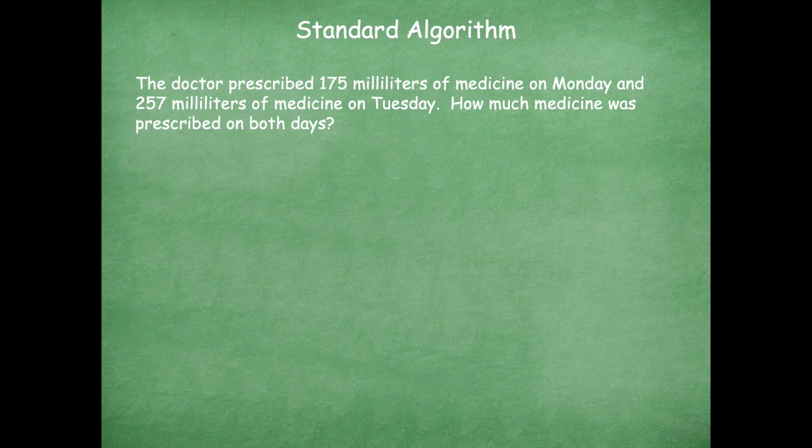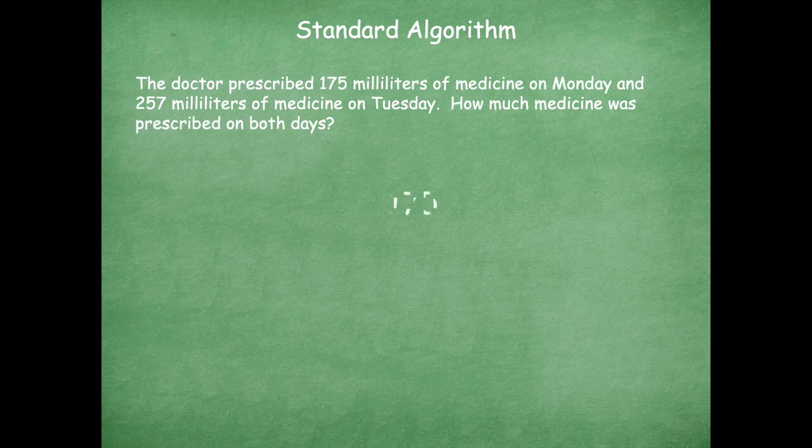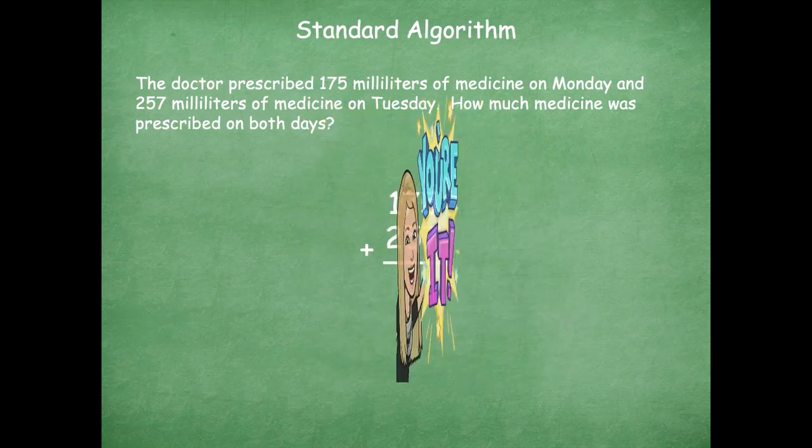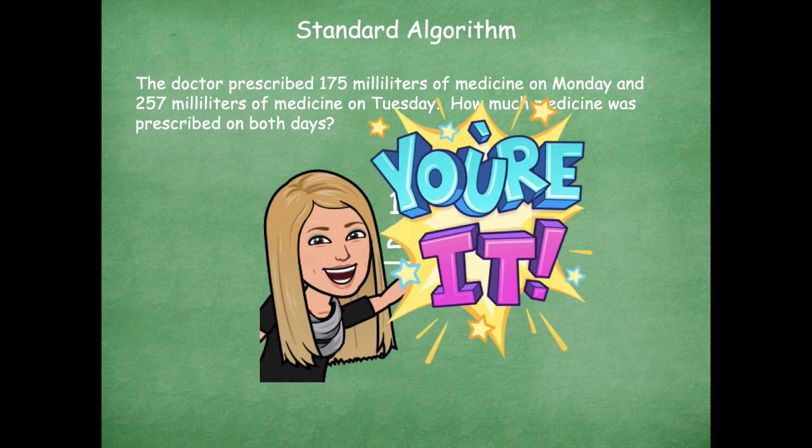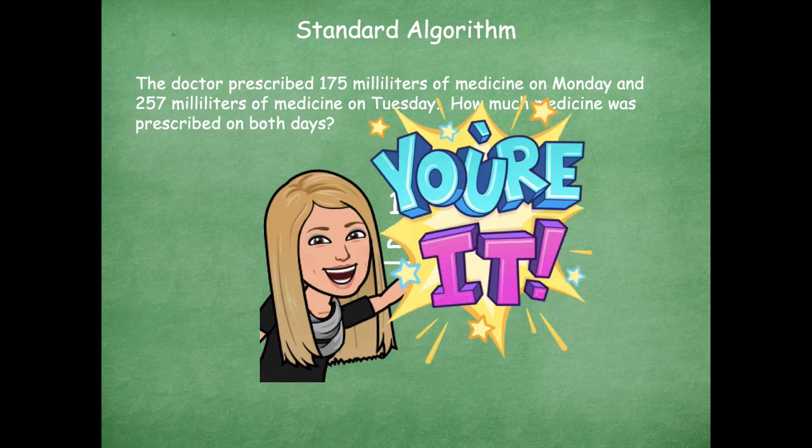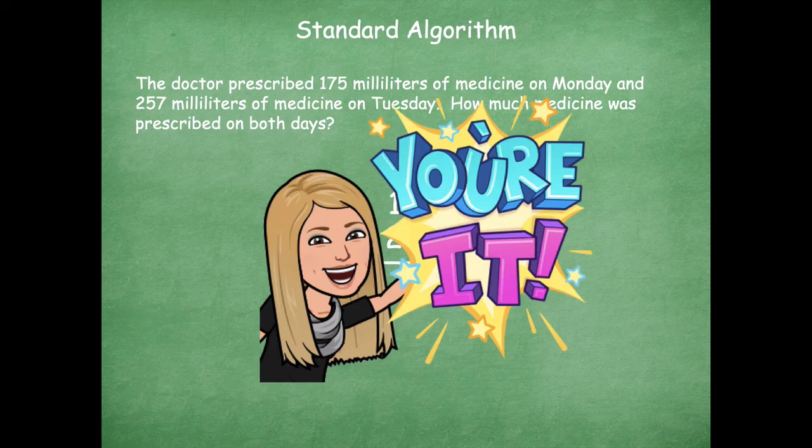So when they're talking about Monday and Tuesday and they want to know something about both days, I'm going to add those together. So I'm going to add 175 plus 257. You guys are it again in this one. I love it. You guys are just rock stars working so hard. So go ahead and pause the video and solve 175 plus 257 and then click play when you're ready to go over it together.